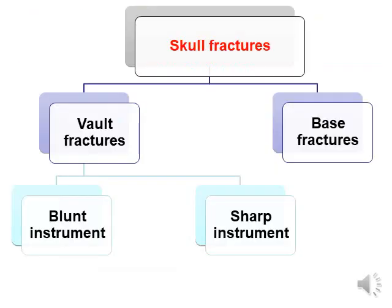Skull fractures can be classified into vault fractures and base fractures. Vault fractures are classified by the instrument: blunt or sharp. For base fractures, sharp instruments rarely reach the base, so most base fractures are caused by extension from vault fractures or indirect trauma, except for indirect fractures.